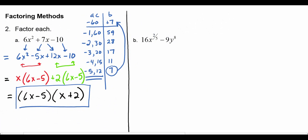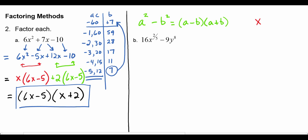Part 2, Example B: we're going to look at how to factor the difference of two squares. The rule is that a squared minus b squared factors to be a minus b times a plus b. Another rule we'll need is that when you take a power to a power, x to the a raised to the b equals x to the a times b. We're going to use both of these rules for this factoring.